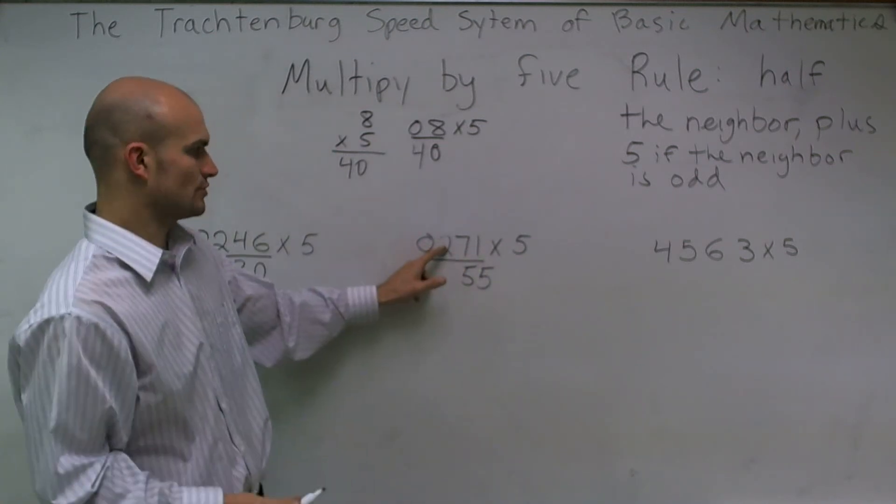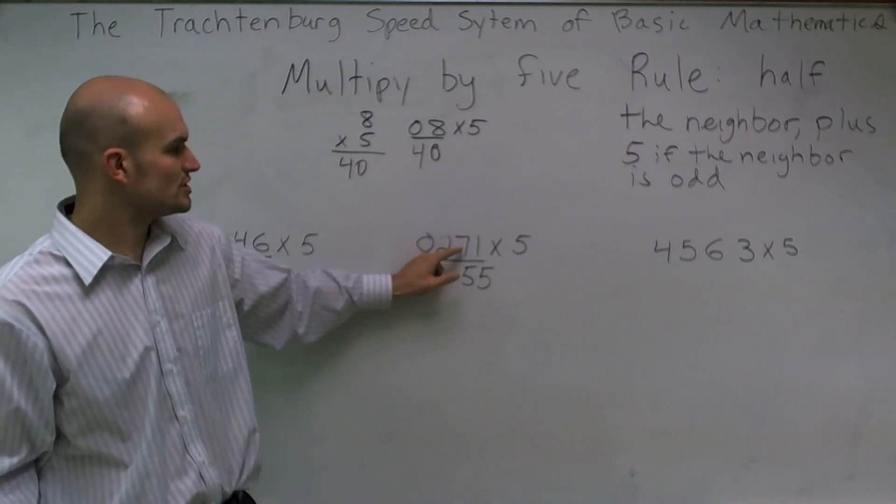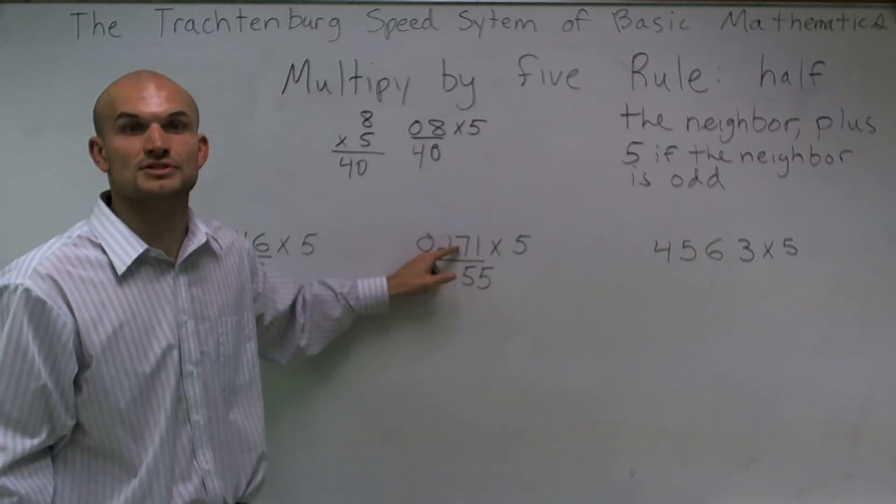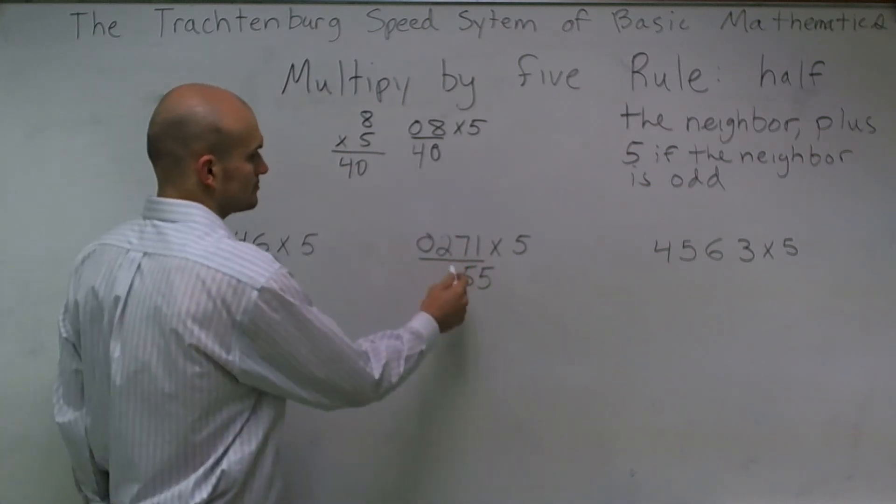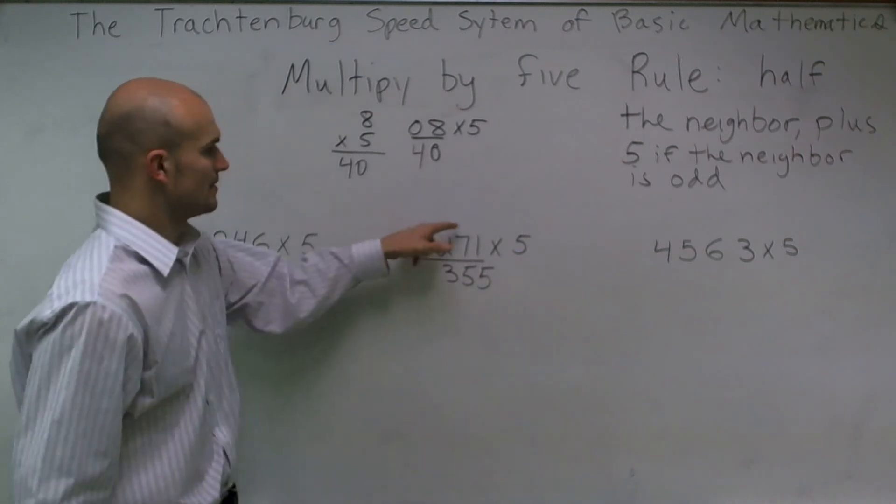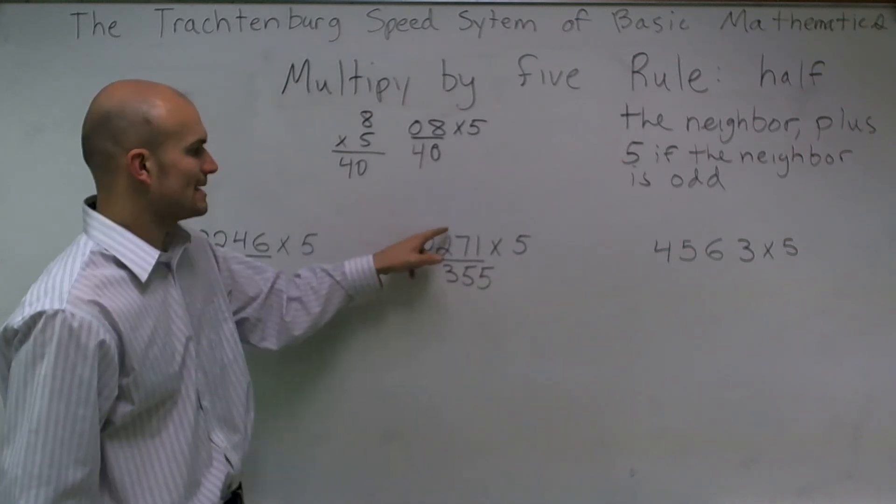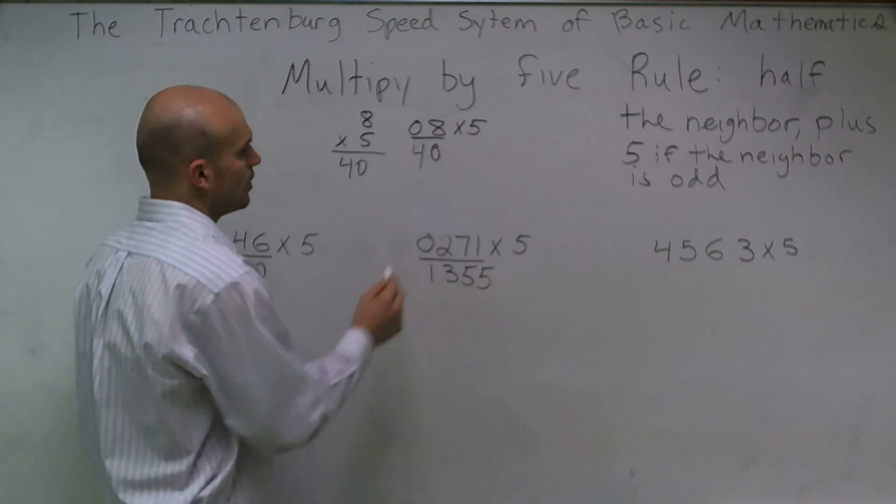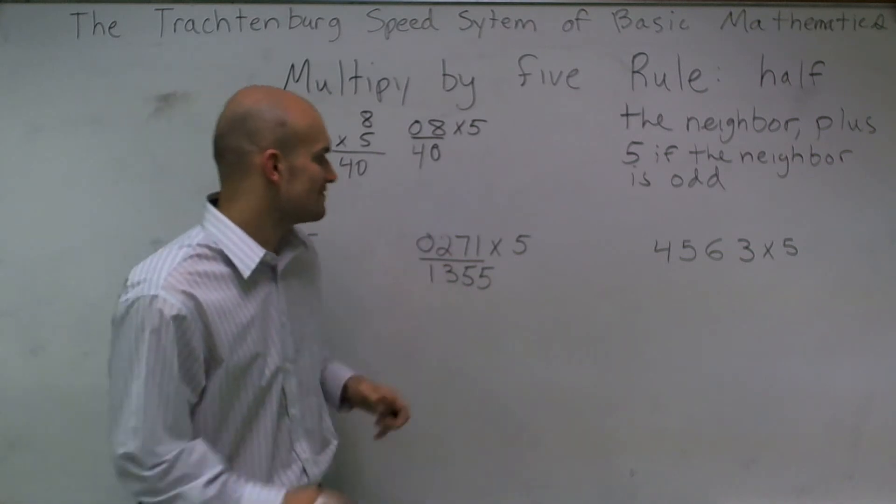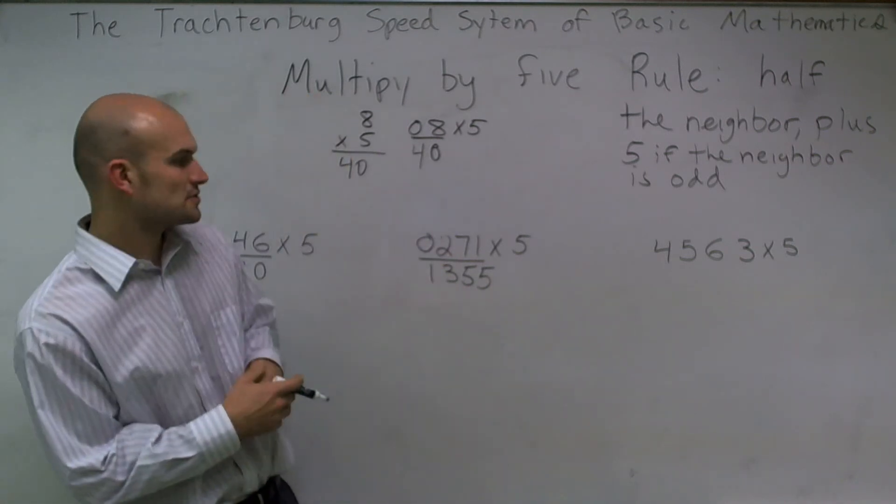Then I move to my next one, 2. Half of my neighbor, which is 7. So half of 7 is going to be 3 right there. Then I move to my next one, 0. Half of my neighbor, which is going to be 1. So I'm multiplying 271 times 5. I get 1,355.